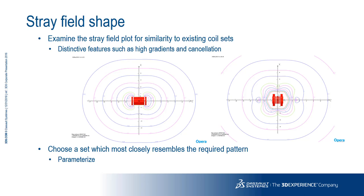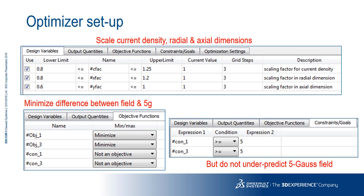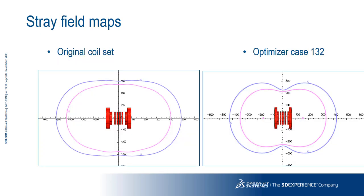We know from the measured stray field map where the 5 gauss line intercepts the axes, so we set up different objectives based on those axial values. For this example we have three variables: the scaling factors applied to the current density, the radial dimension, and the axial dimension. Customers have used many more variables in real examples, with coil cross-sections and individual dimensions being varied. We have two objectives: to minimize the difference between the calculated stray field at the crossing points and the desired value of 5 gauss. We set constraints to make sure the field is at least 5 gauss for a factor of safety. From this, the optimizer produces a set of designs that meet the constraints. Here we see what the optimizer has done to the original coil set — the coils have mainly been scaled in the axial direction, and you can now see the very pronounced dip in the field on the center line as seen in our measured stray field map. Coil design 132 is now suitable to use in our shield calculations.